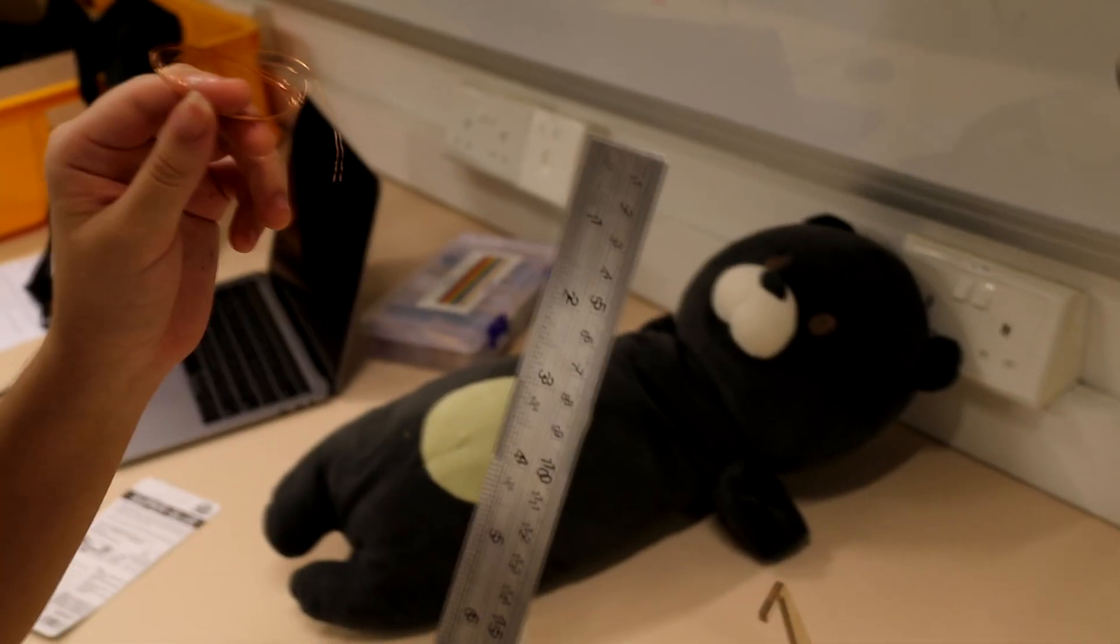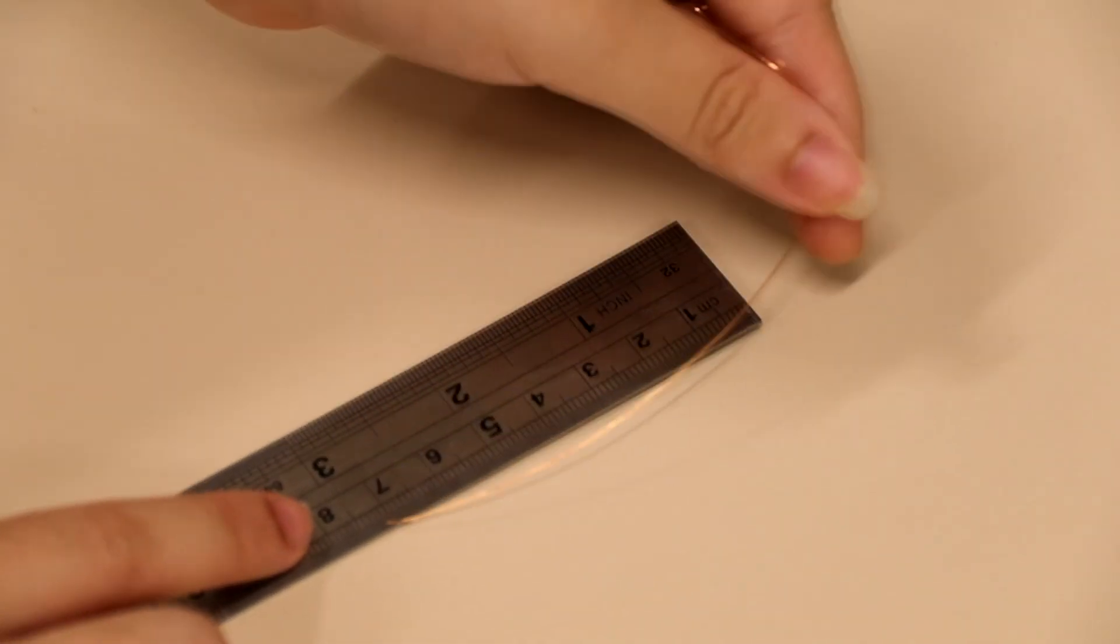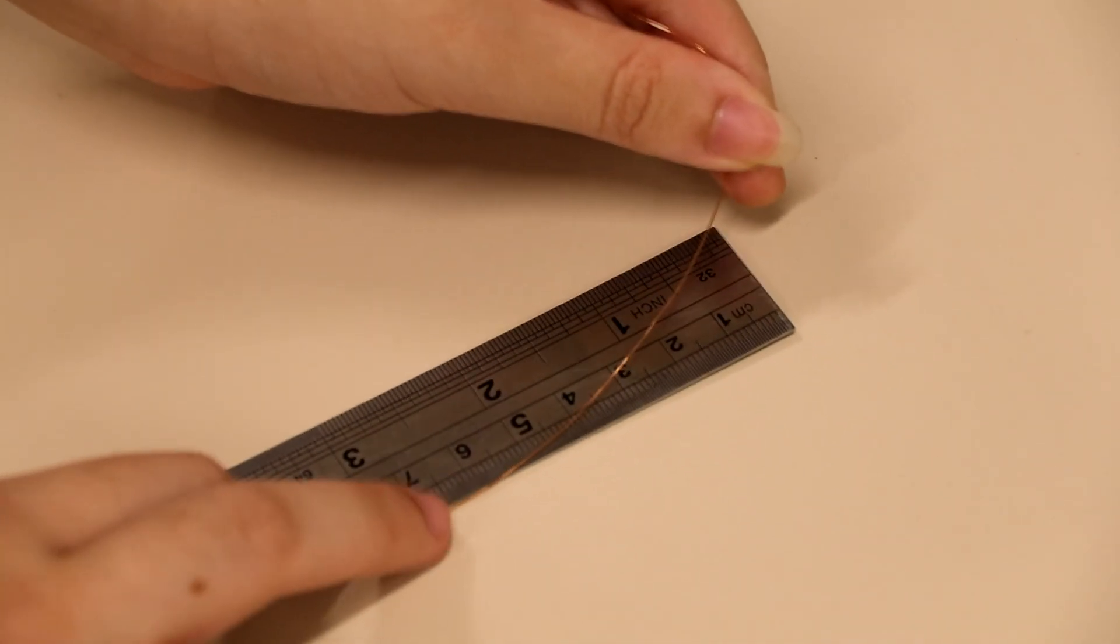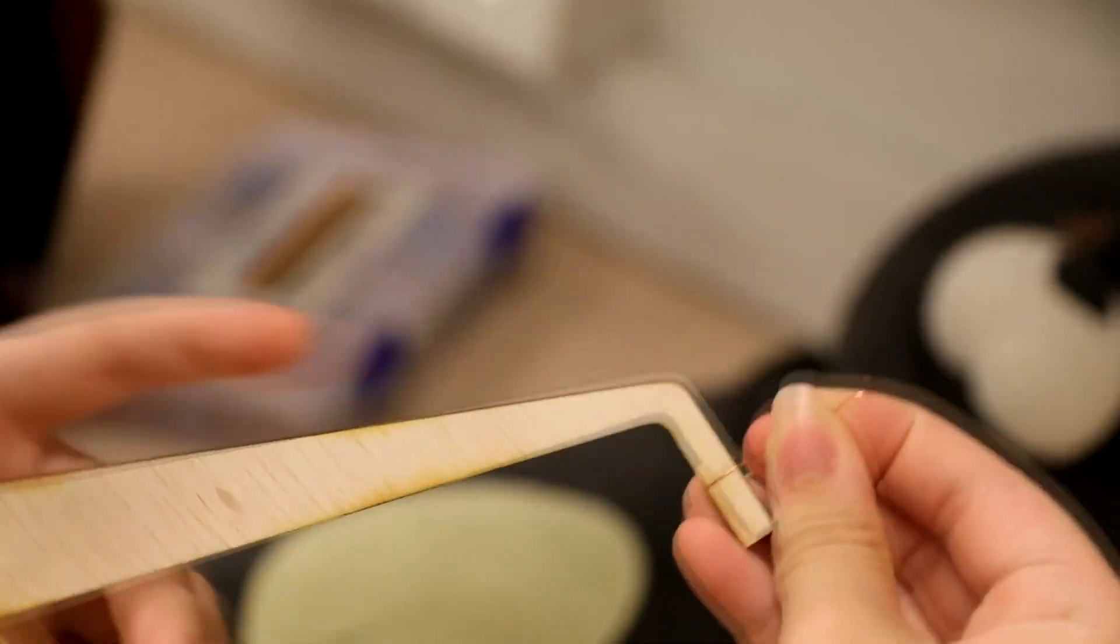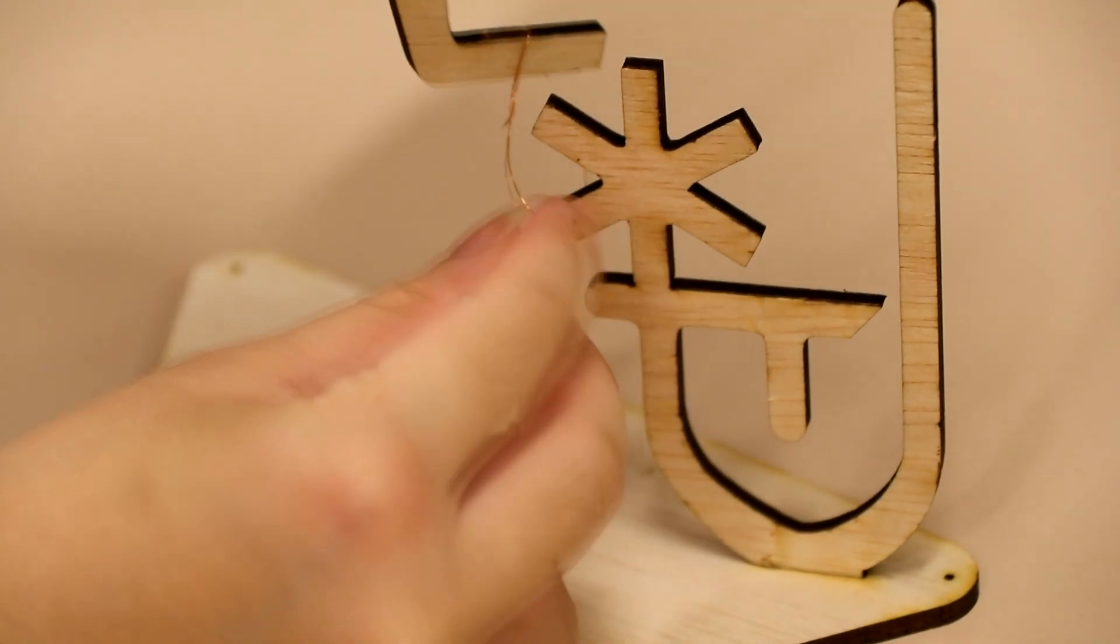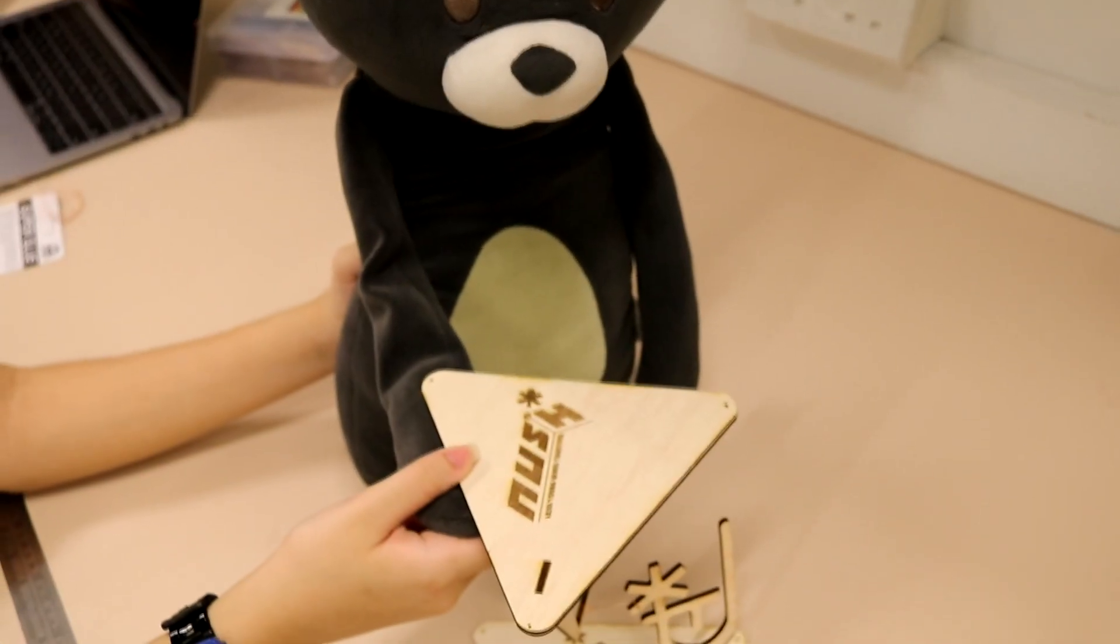Step 3. Using a ruler, measure and cut 7.5 cm of copper wire. Use it to tie the L-shaped piece to the NUS High logo-shaped piece. You can twist the wire to secure it. And you're done!